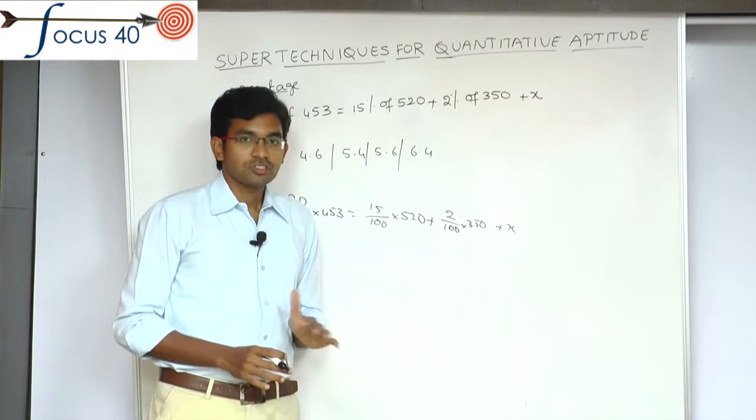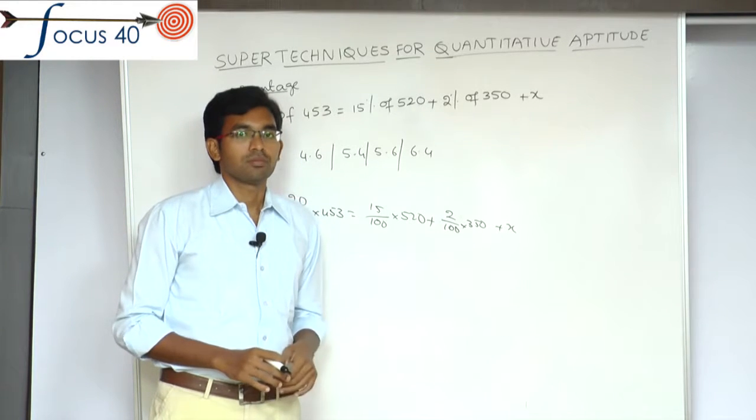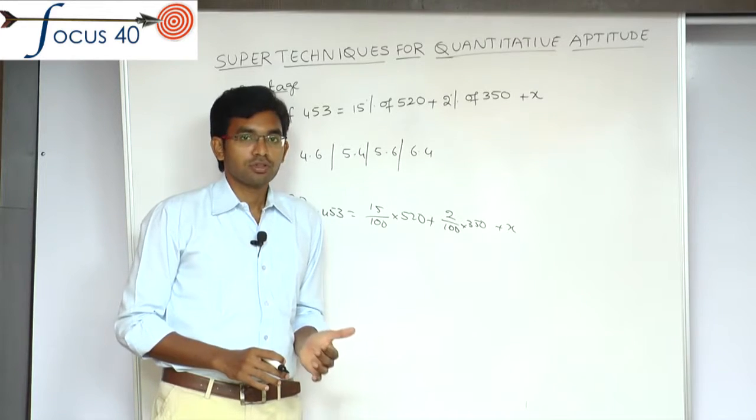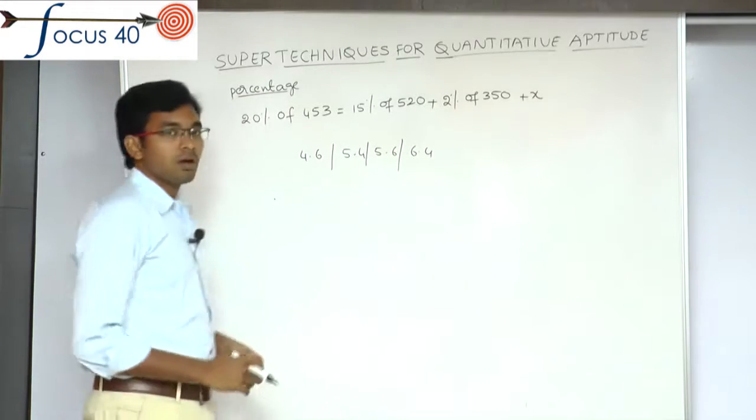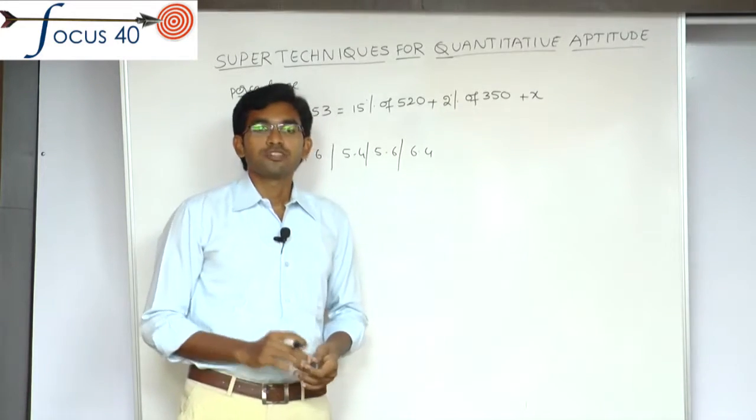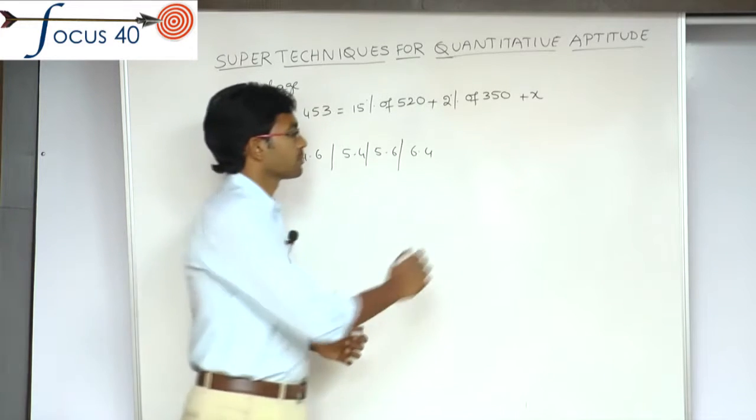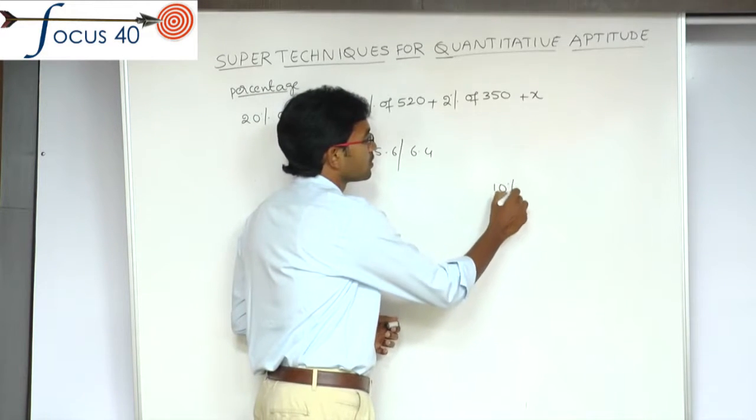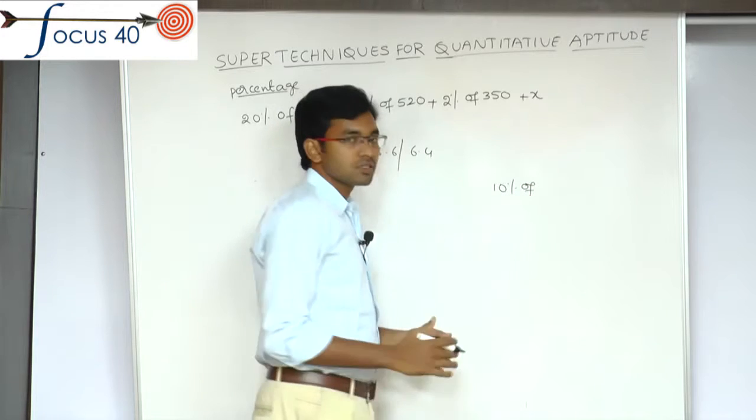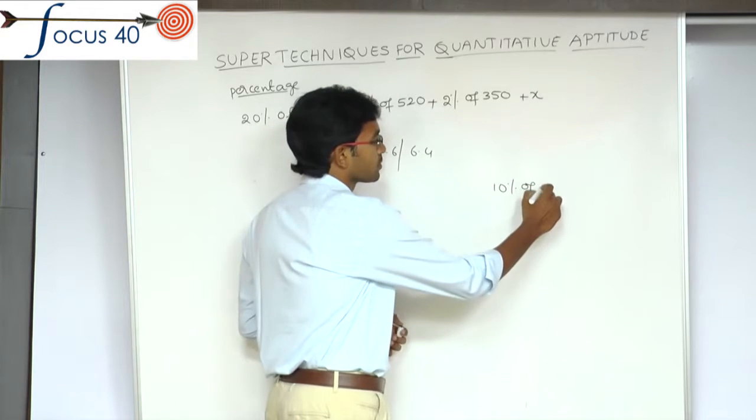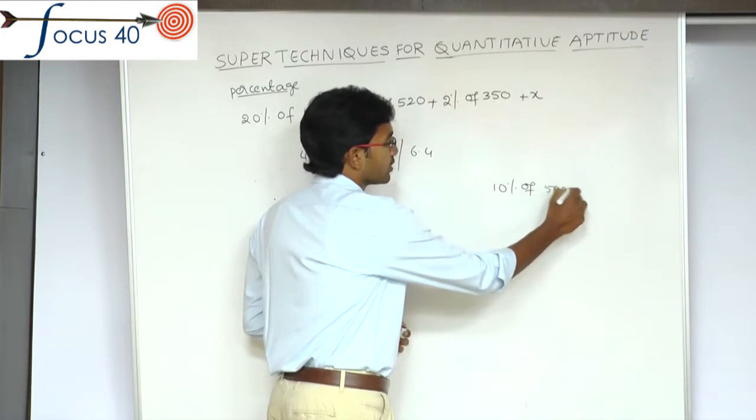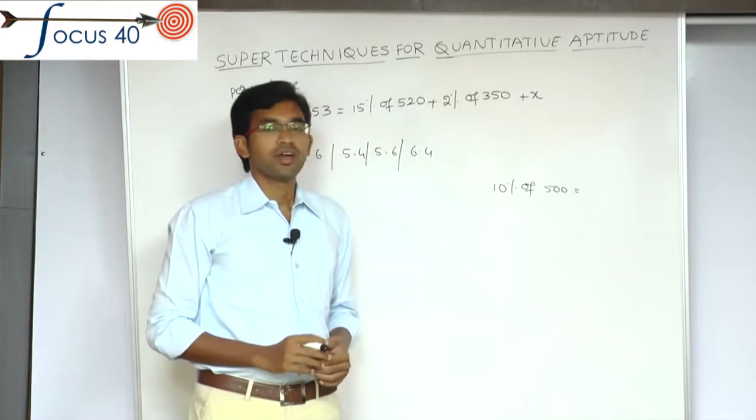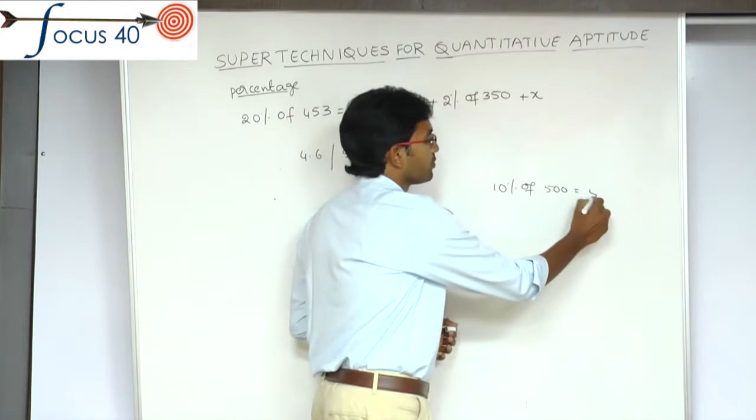In competitive exams, this process takes a little more time. We need a more effective method. We will see that method. Before going to that method, I will explain you two points. 10% of 500 is equal to 50.